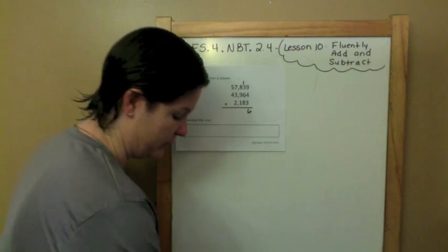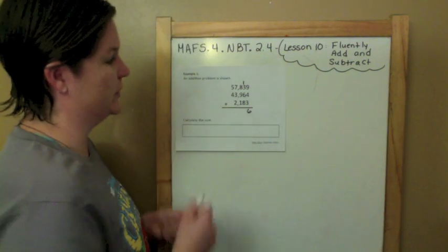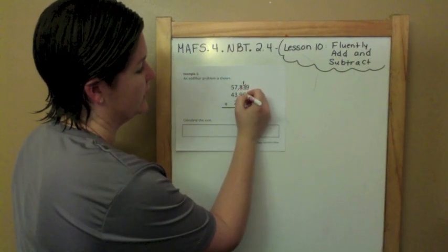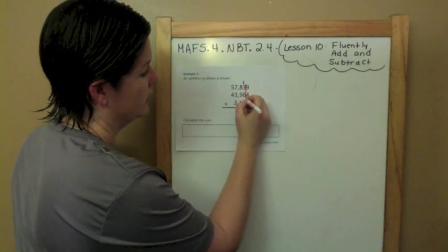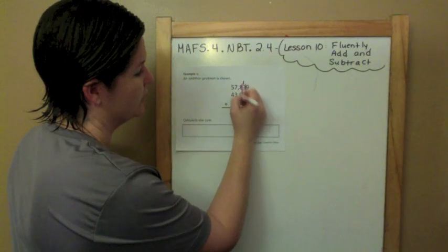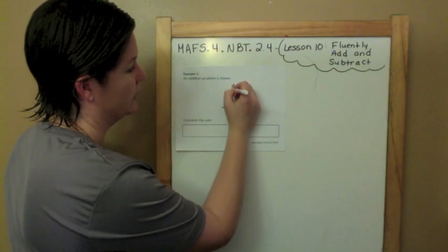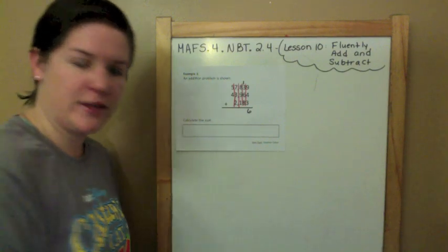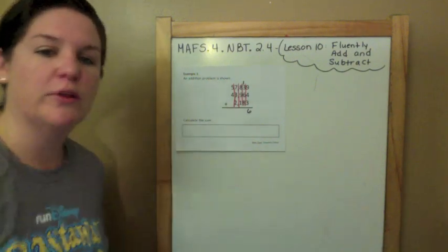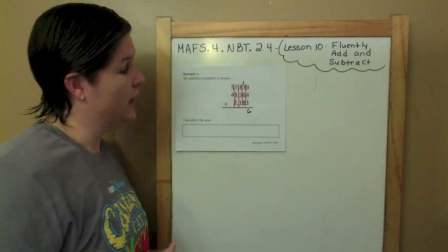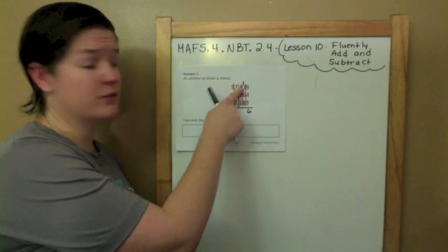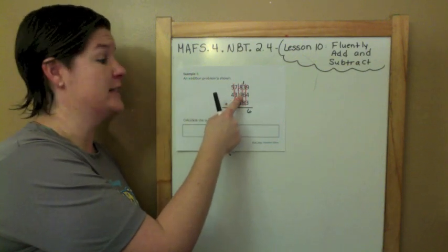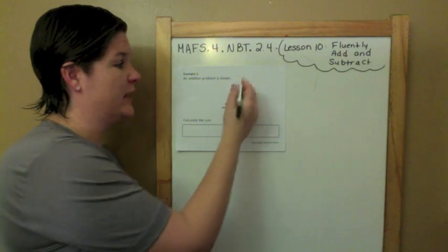Some people like to break these apart into the different place values so you can see what's going on. Just be careful to keep everything in the right column, in the right place. So: 1 plus 3 is 4. 4 plus 6 — that's an easy 10. And 10 plus 8 is 18. Carry the 1.